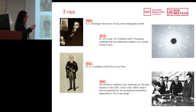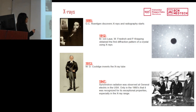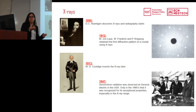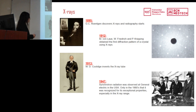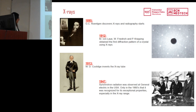Just a brief introduction about X-rays. X-rays were first discovered by chance in 1895, and were called X-rays because they were like weird rays that could travel through humans. In 1912 the first diffraction pattern of a crystal using X-rays was obtained, and in 1913 Coolidge invented the first X-ray tube. It was not until 1947 that synchrotron radiation was first observed at General Electric in the United States, and only in the 1960s was this recognized for its exceptional properties, especially in the X-ray range.